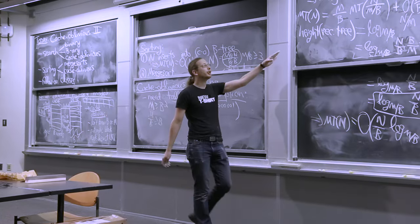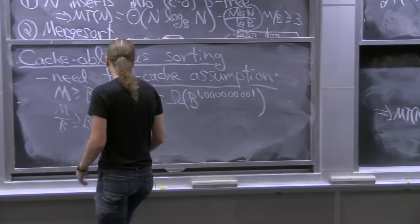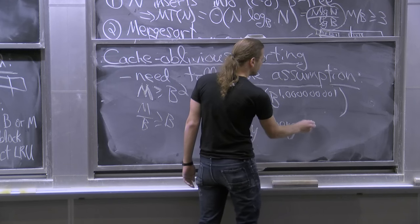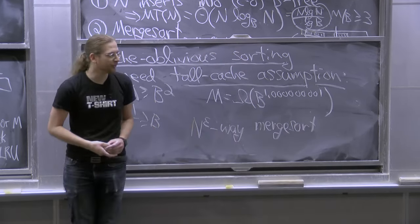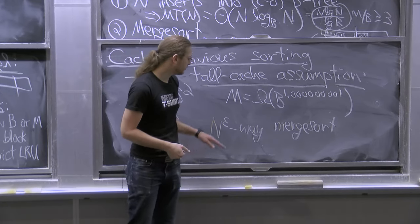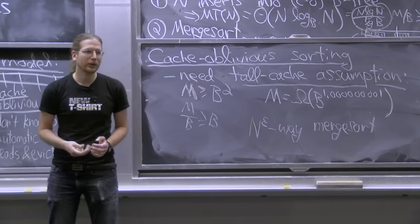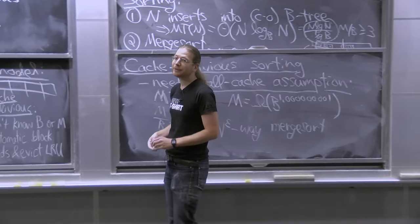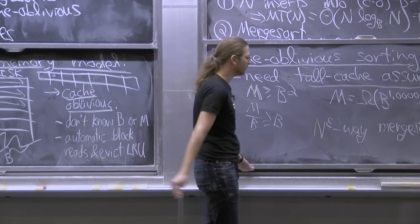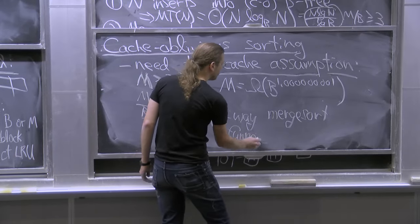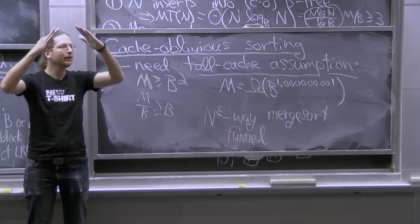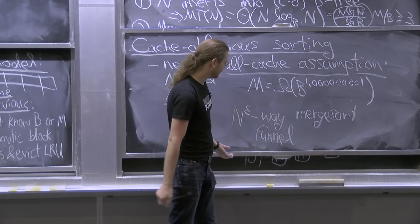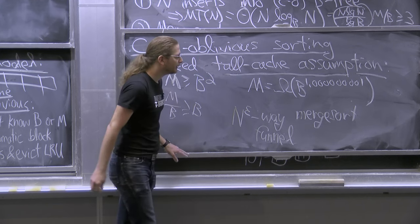The approach for cache oblivious sorting is N^ε-way merge sort instead of M/B-way, since we don't know M/B. We don't know how to merge N^ε arrays with a simple scan, so instead we do a divide-and-conquer merge. This is called funnel sort, because the divide-and-conquer merge looks like a funnel — similar to the triangle structures we drew earlier. Analyzing it takes another 40 minutes, so I won't do it here.